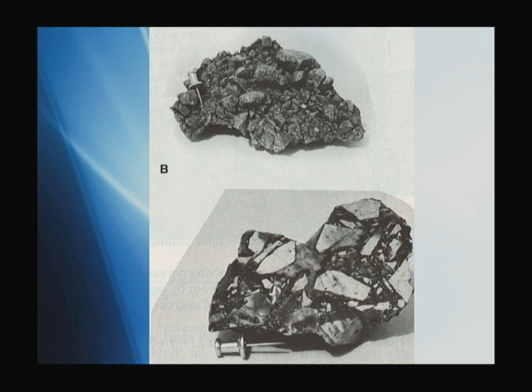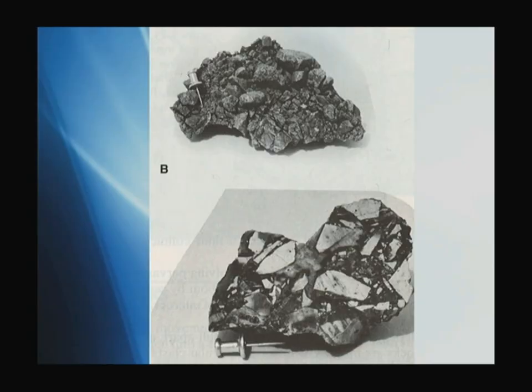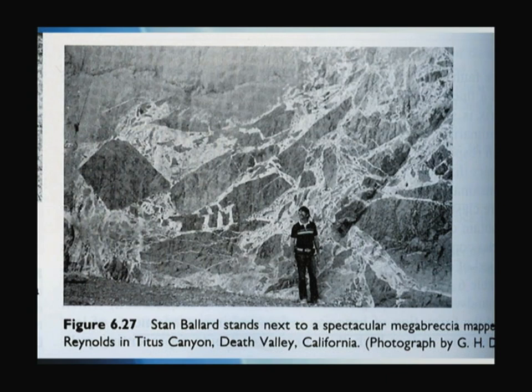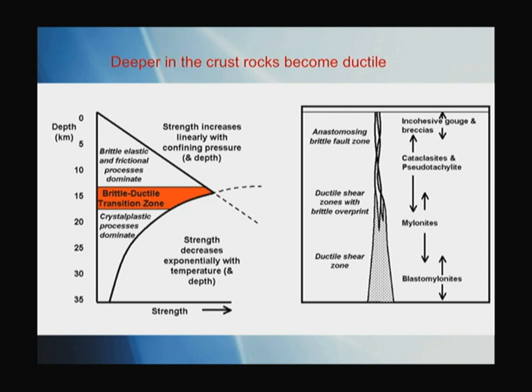Here's a mineralized breccia. Often these fault zones can have hot water coming up them, depositing minerals such as gold and hematite and other types of things. Some of our biggest mines are associated with mineralized fault zones. This is a big breccia out in Death Valley in Titus Canyon, which is not that easy to get to, but this is a very spectacular breccia.